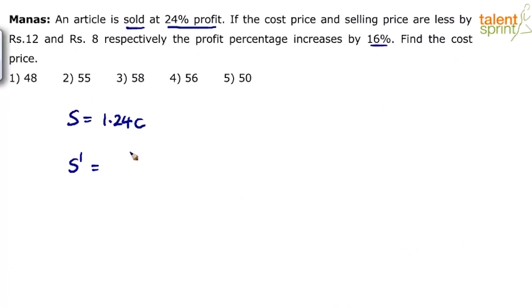So we can say the selling price S' is going to be... Let me write the profit percentage first. The new profit is going to be 24% plus 16% which is 40%. You don't have to write this in the exam. Just trying to explain this in detail.